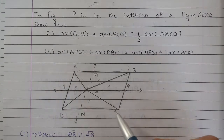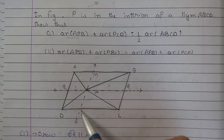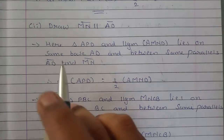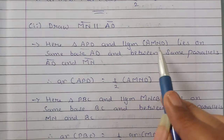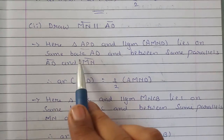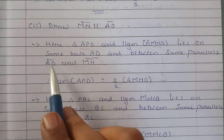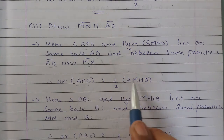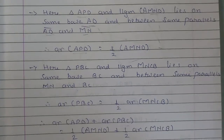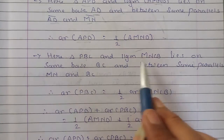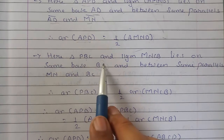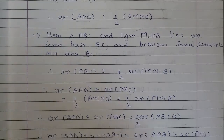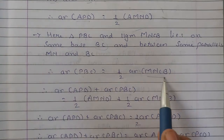Matlab BPC ka area MBCN ke area se half hoga. Ab yahi cheez likhni hai. So, APD aur AMND same base AD ke upar hain aur dono parallel lines AD aur MN ke beech mein hain — yani APD ka area AMND ke area se half hoga. Isi tarah se PBC aur MNCB same base BC ke upar hain aur parallel lines MN aur BC ke beech mein hain — matlab PBC ka area MNCB se half hoga.